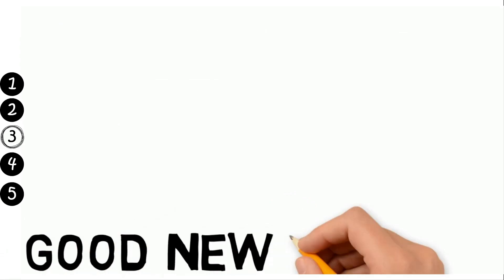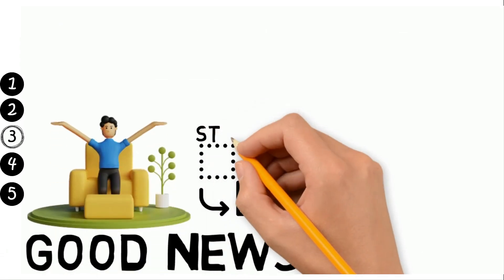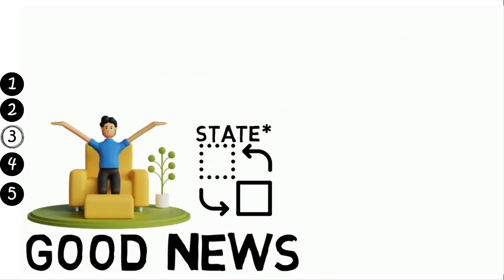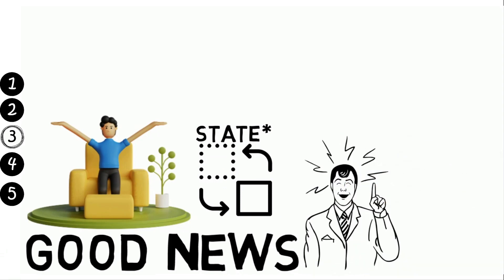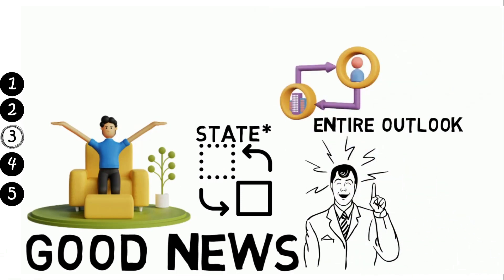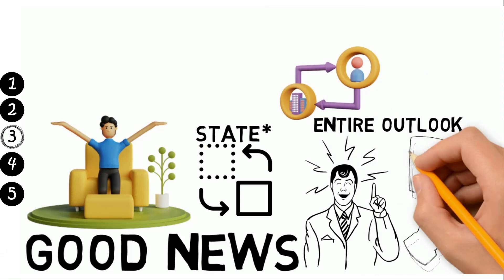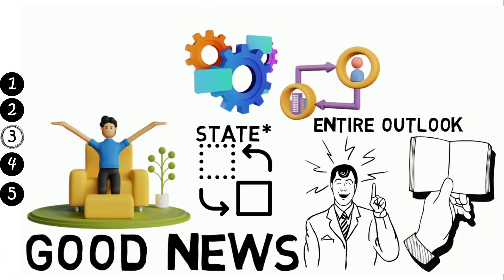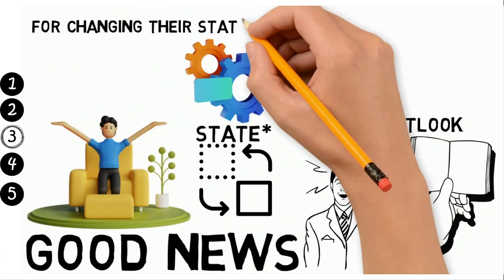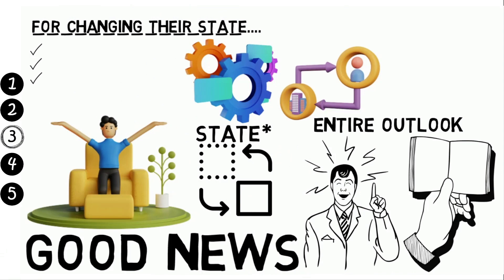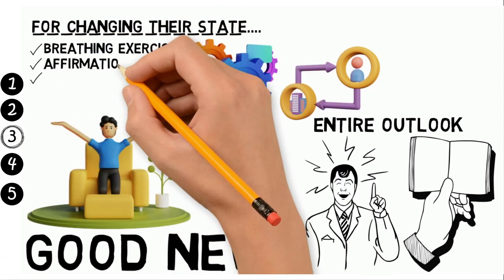The good news is that we have the power to choose our state. By deliberately putting ourselves in a positive state, we can change our entire outlook on life. In Chapter 3, Tony Robbins provides readers with powerful tools for changing their state. These include things like breathing exercises, affirmations and visualization.